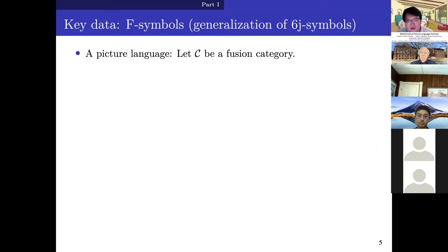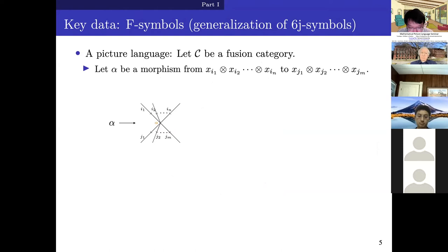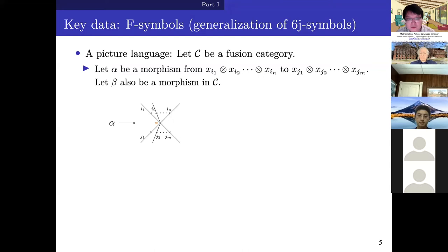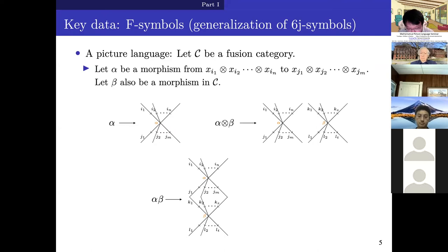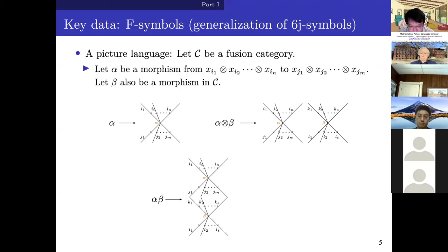Before defining F-symbols, let me introduce a picture language widely used to study fusion categories. Let C be a fusion category and alpha a morphism in this category. We can represent alpha as a picture — an n plus m vertex with degree n plus m edges. This is not only a notation but captures the structure of the fusion category. The tensor product of two morphisms is represented by placing the pictures side by side. If two morphisms can be composed, we stack the corresponding pictures from top to bottom.